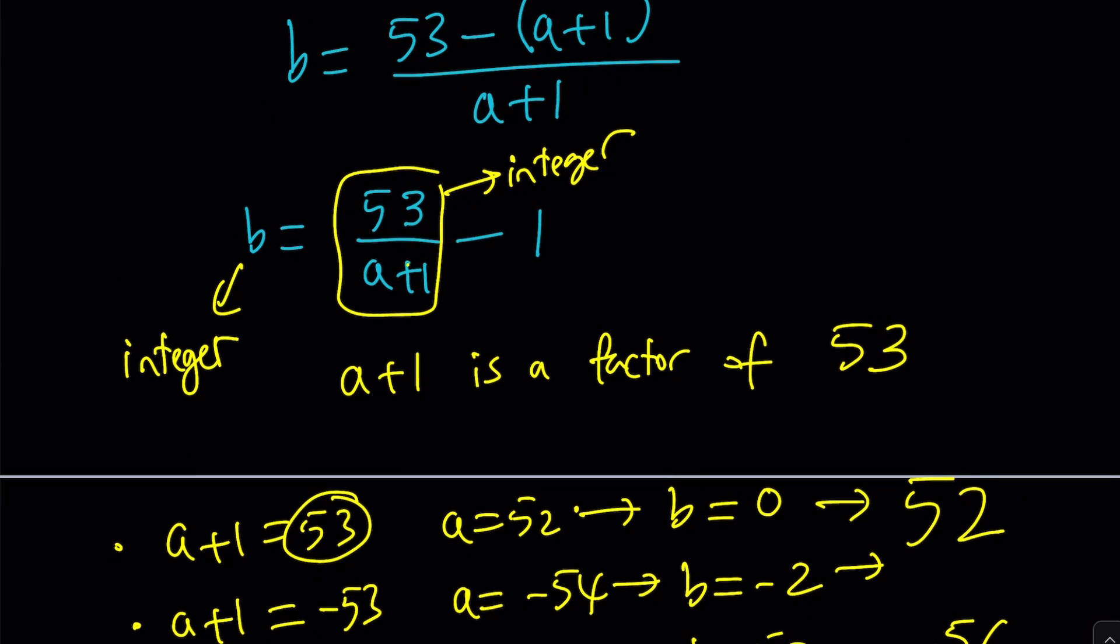Let me just tell you something real quick, and then we'll finish up. Notice that here, if you add 1 to both sides, you're going to get b plus 1 equals 53 over a plus 1. And then by cross multiplication, you'll end up with the exact same equation that we work with. And this brings us to the end of this video.